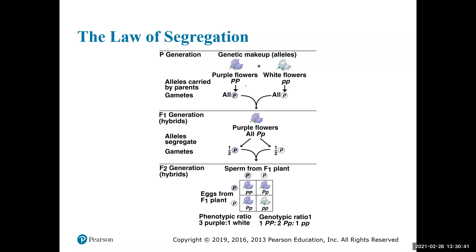We know purple is dominant to white because when we cross a purple flower with a white flower, all offspring are purple — meaning purple is masking the white flower color. If you breed pure-breeding parents, the trait that shows up in the F1 generation is the dominant trait. When we look at what alleles can be passed on, the purple flowers only have capital P's so they always give capital P's, and the white flowers only have lowercase p's so they always give lowercase p's.